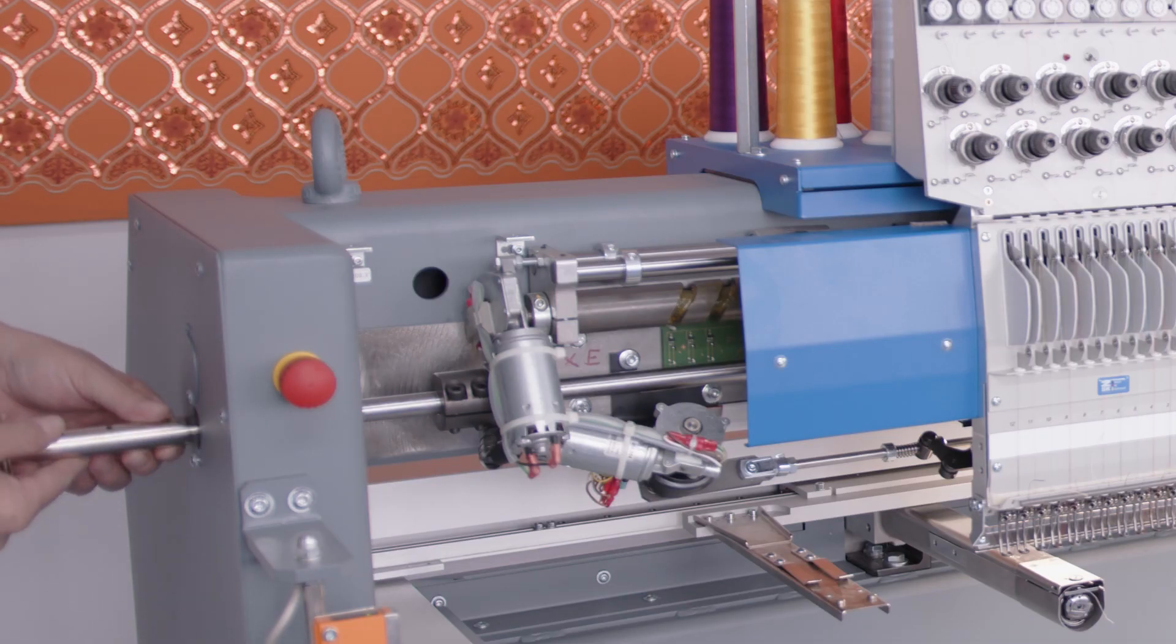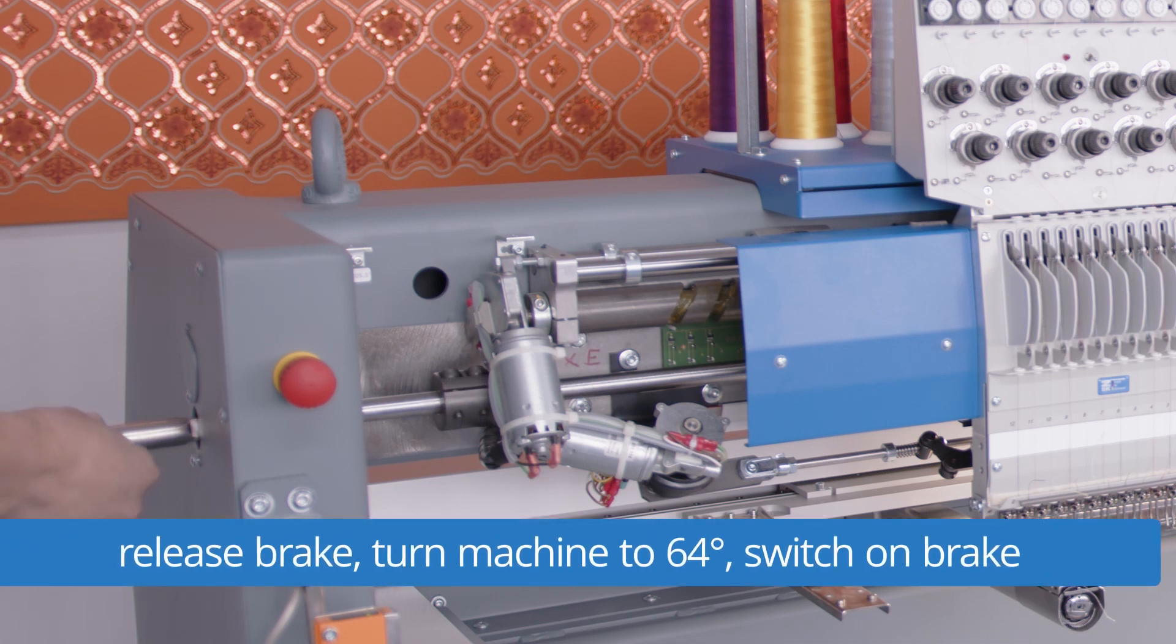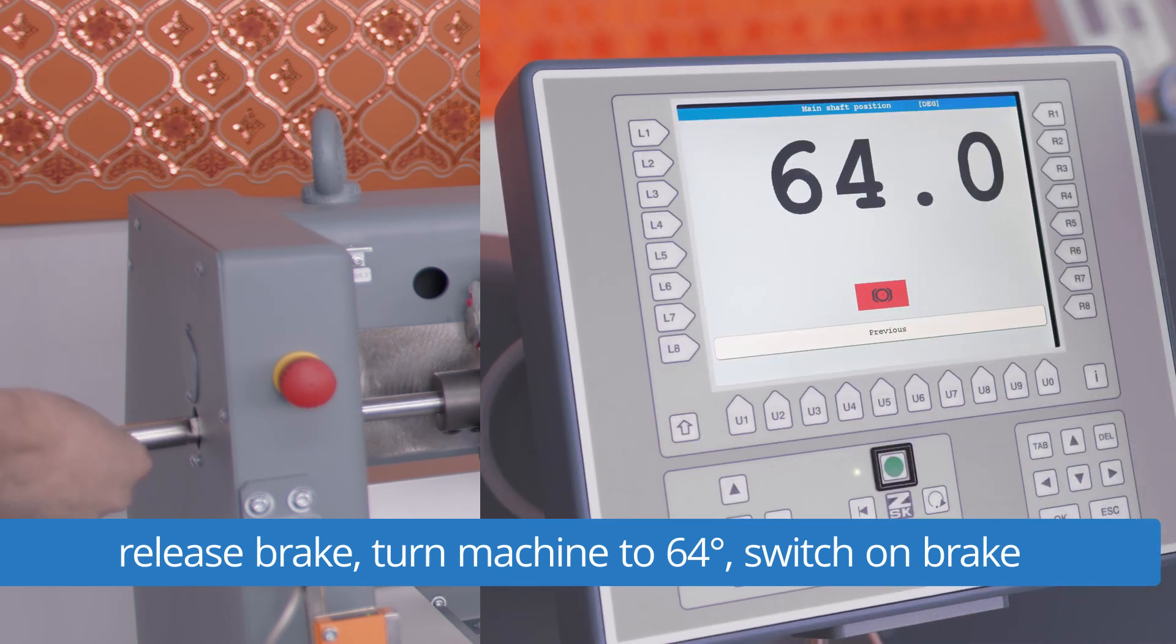Now we have to turn the machine manually to the stop position 64 degrees. Therefore release the brake, turn the machine manually to 64 degrees and switch on the brake.